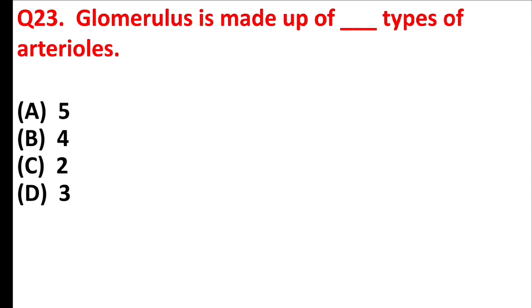Glomerulus is made up of dash types of arterioles. Answer is option C, 2.